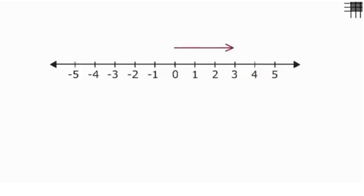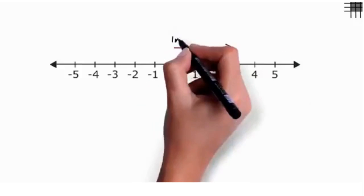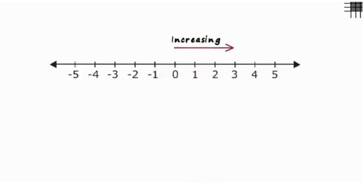When we move towards the right on a number line, the numbers keep increasing. And as we move towards the left, the numbers keep decreasing.